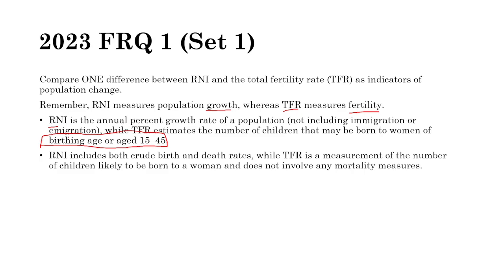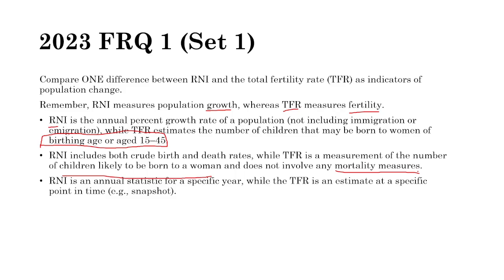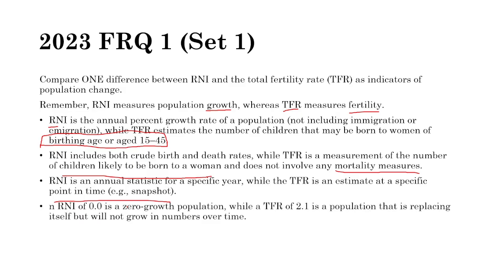Another difference: RNI includes crude birth rates and crude death rates, while TFR only looks at births, not mortality. RNI is an annual statistic for a specific year, while TFR is an estimate at a specific point in time — like a snapshot. Also, an RNI of zero means zero population growth, but a TFR of 2.1 means the population is replacing itself — not growing in numbers over time.